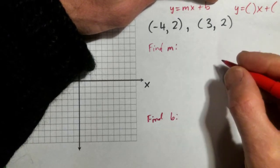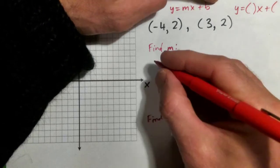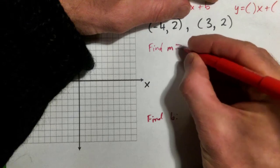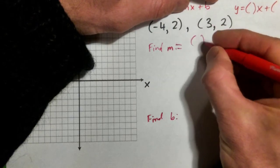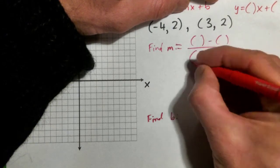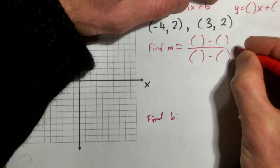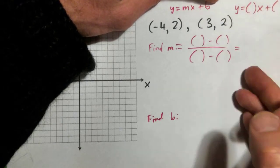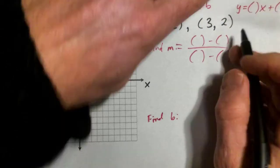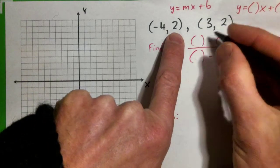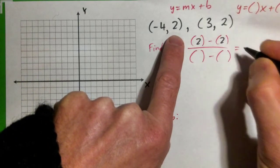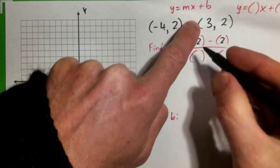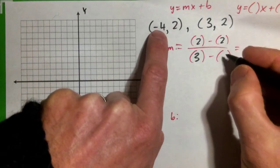So finding m, that's the slope formula: m = (y2 - y1)/(x2 - x1), or the difference between the y's over the difference between the x's. So it's this y minus this one, which is 2 - 2 on the top, and on the bottom it's this x, 3 minus negative 4.